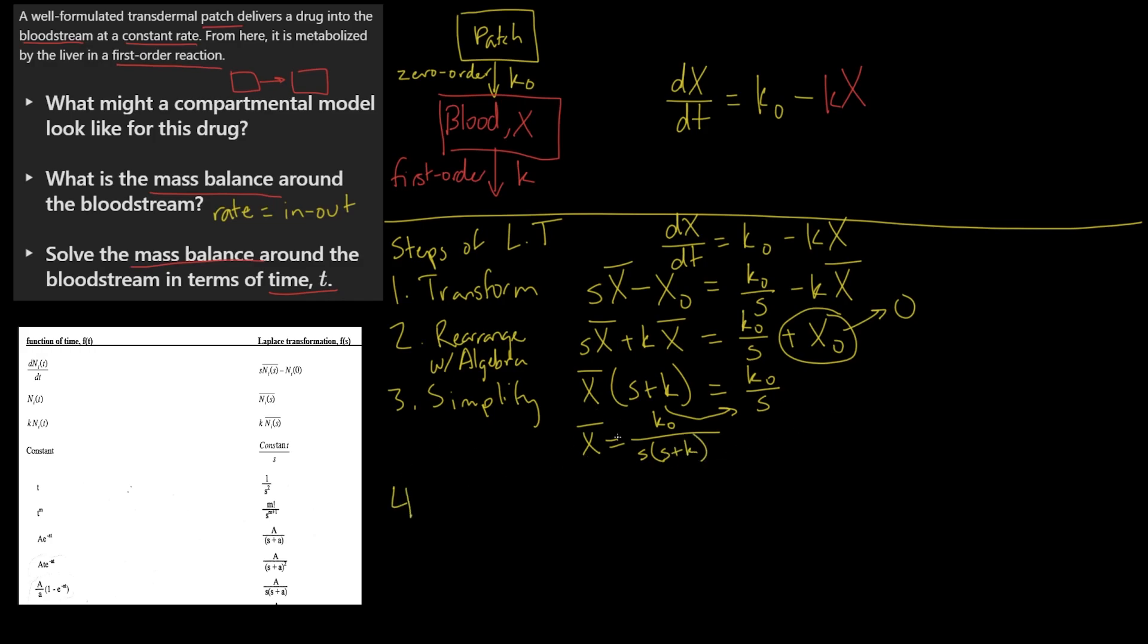And step four, now that we have X̄ isolated, we can reverse transform. So the reason that we get X̄ on one side is to turn it back into X using the chart—just go from right to left this time. This right side, you might have to dig around, but you can recognize that you set k₀ to be capital A, you get k to be lowercase a, and these are all just constants, right, rate constants. Then you can find the formula that's A over s times (s plus a).